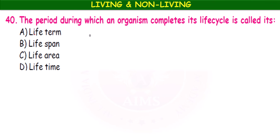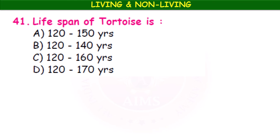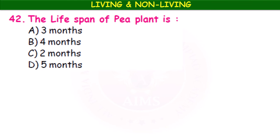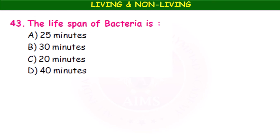The period during which an organism completes its life cycle is known as lifespan. The lifespan of a tortoise is 120 to 140 years. The lifespan of a pea plant is 4 months — it is a crop. The lifespan of bacteria is 20 minutes — a very short lifespan.